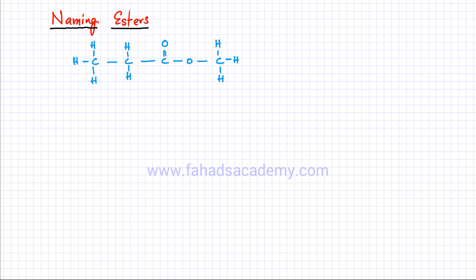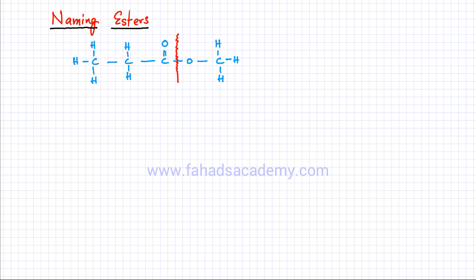Naming esters is going to be slightly different from naming other organic compounds, because esters are named in two parts. What you do is divide the ester molecule into two sides — one side is on one side of the ester link, and the other side is on the other side of the ester link, dividing the molecule into two parts.